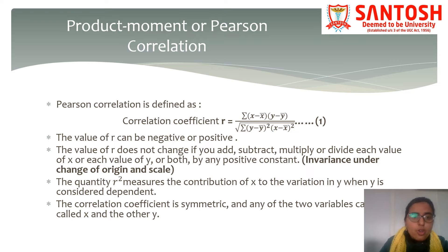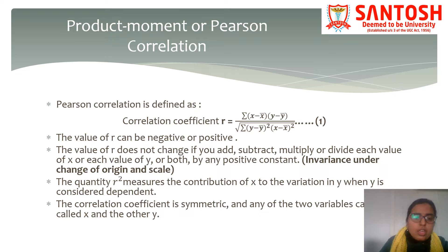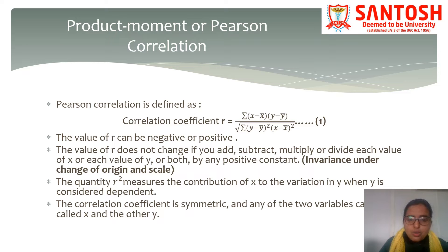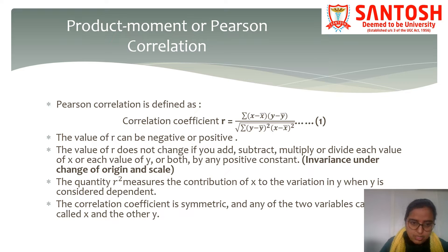The first measure we will talk about in correlation is the product-moment or Pearson correlation, which is frequently used in the case of quantitative variables. The formula is given as: summation of (x minus x-bar)(y minus y-bar) divided by the square root of the product of summation (x minus x-bar) squared and summation (y minus y-bar) squared. This formula is further simplified in the example given in the next slide. You will need to calculate the mean and variance of the two variables.